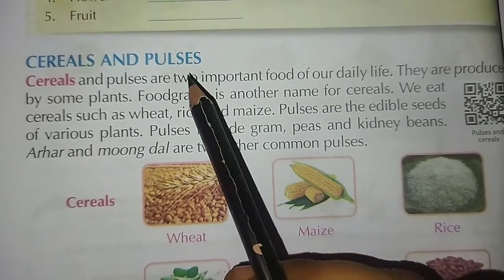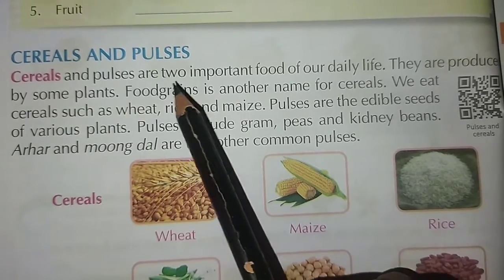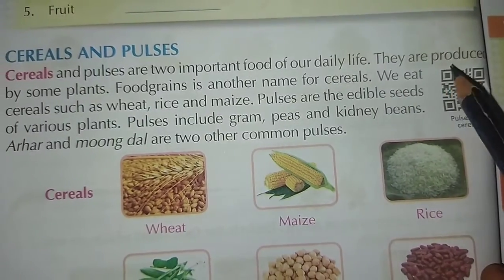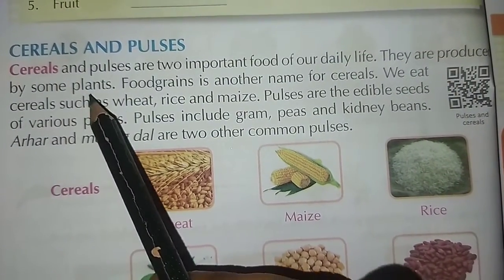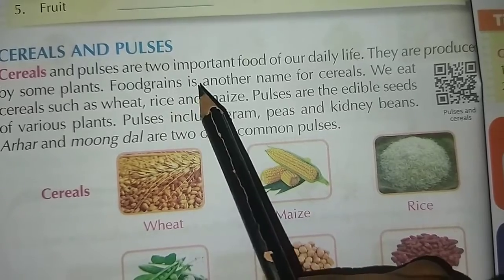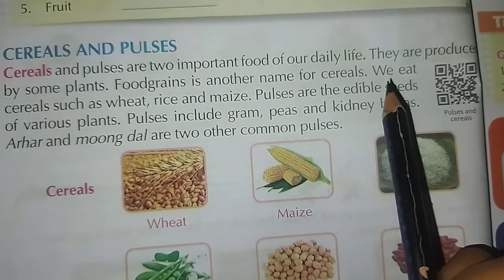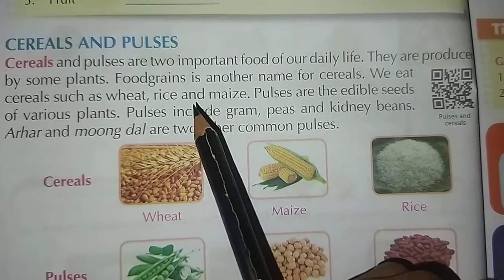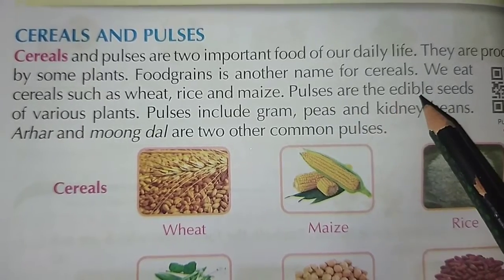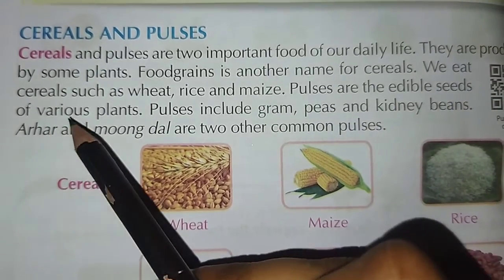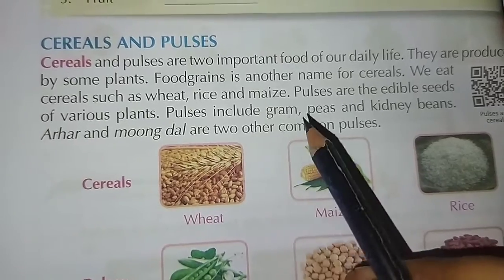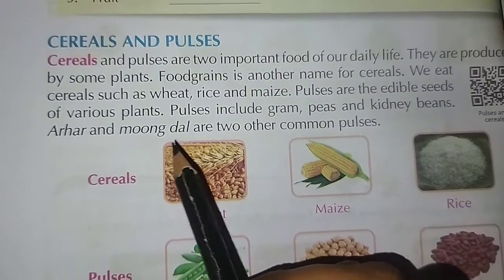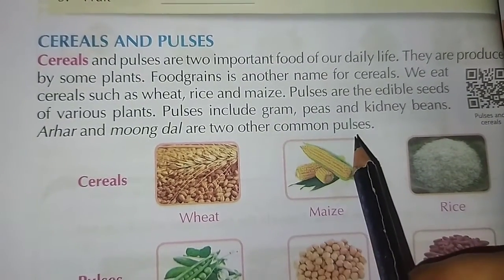Cereals and pulses are two important foods of our daily life. They are produced by some plants. Food grains is another name for cereals. We eat cereals such as wheat, rice and maize. Pulses are the edible seeds of various plants. Pulses include gram, peas and kidney beans. Arhar and mung dal are two other common pulses.